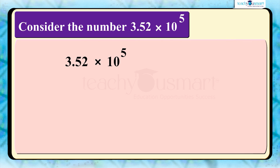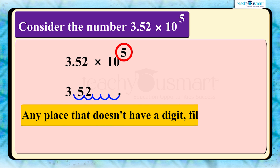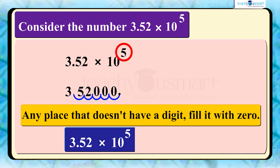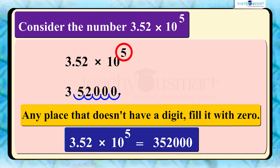Alternatively, since the power of 10 is 5, which is positive, we move the decimal point 5 places to the right. Where there is no digit, we fill with zero. Thus the usual form of 3.52 multiplied by 10 raised to 5 is 352,000.